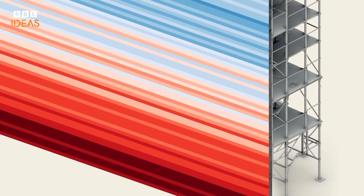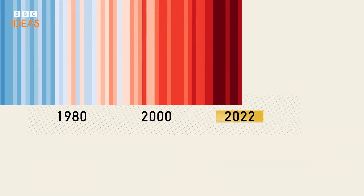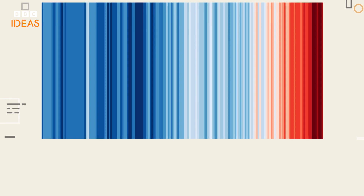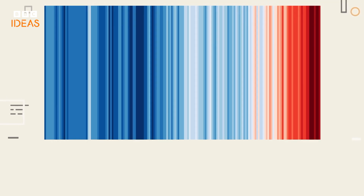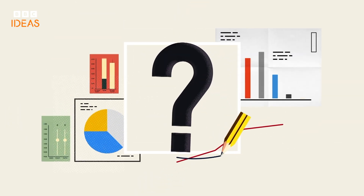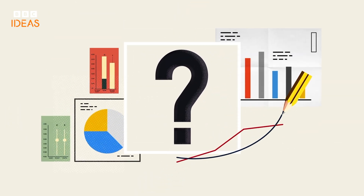Updated every year, Hawkins says 2022 was the first year that every country needed a new red stripe, demonstrating how fast the Earth's climate is changing. Although the graphic breaks some of the rules of data visualisation — it doesn't provide a title or legend — arguably it is one of the most iconic graphics of modern times. What do you think the next chart to change the world will be?